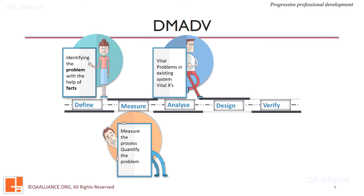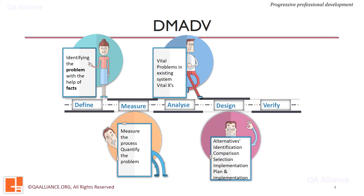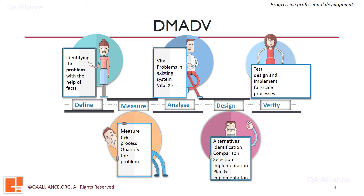In the Design phase, the team came up with possible routes and alternatives for the new performance management system. They compared the alternatives, selected the most feasible and optimal alternative, created an implementation plan and implemented the solution. In the Verify phase, the new system was monitored for the next 3 months and was found to be effective. It took lesser time to find out improvement opportunities for employees.